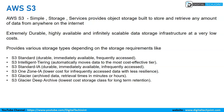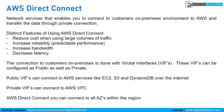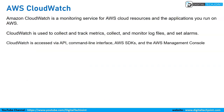Then we have AWS Direct Connect — a network service that enables you to connect your on-premises environment to AWS and transfer data through a private connection. The advantages include reduced cost when using large volumes of data, increased reliability, increased bandwidth, and decreased latency.